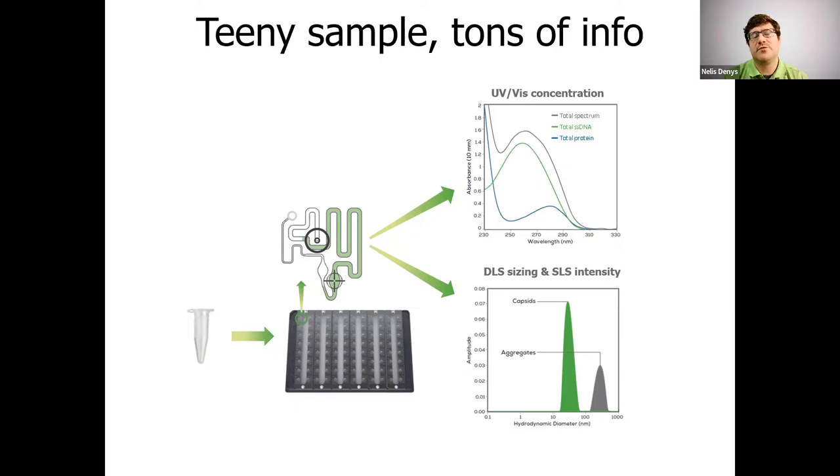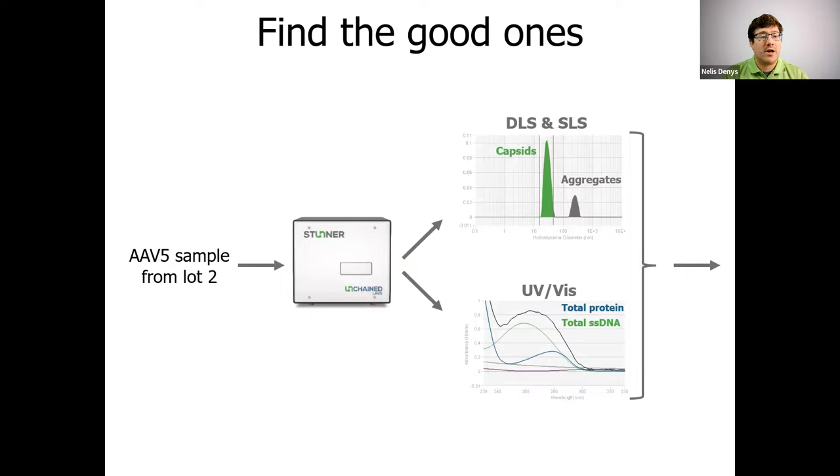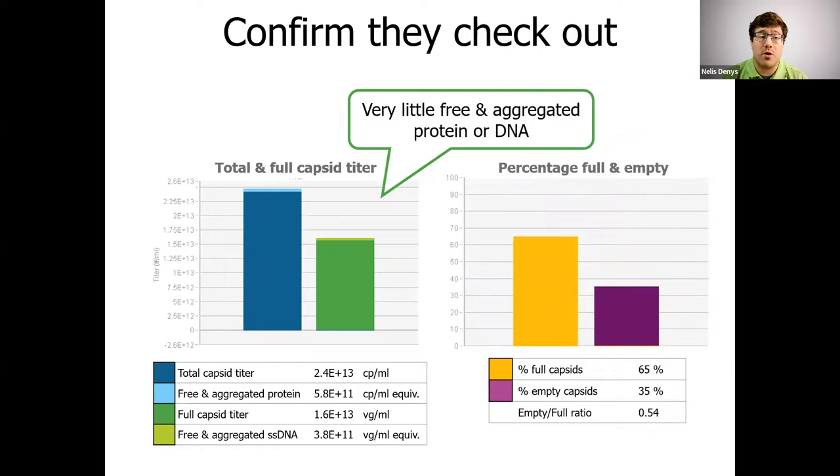Now let's look at some actual samples. Here we ran an AAV5 on Stunner. The DLS already looks pretty good. There's a very small aggregation peak, but most of the signal is coming from the green capsid peak. UV-VIS next to that looks very normal as well. And so when Stunner combines all that data together, it shows you that actually very little free or aggregated protein or DNA exists. So those dark blue and dark green bars go almost all the way to the top. So for this sample specifically, we've confirmed that aggregation is not a big problem. We've gotten total and full titers that show very little extra stuff in there. And we have an empty full ratio as well. That's a pretty good amount of data for just one minute and two microliters.